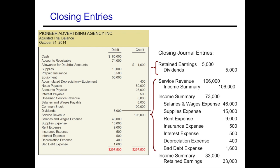Typically there are four closing entries, but some companies do not use an income summary, so you may see revenues and expenses closed directly to retained earnings. In this case we're going to use an income summary, which is simply a very temporary account — it appears and disappears only during the closing process, and it actually computes net income.